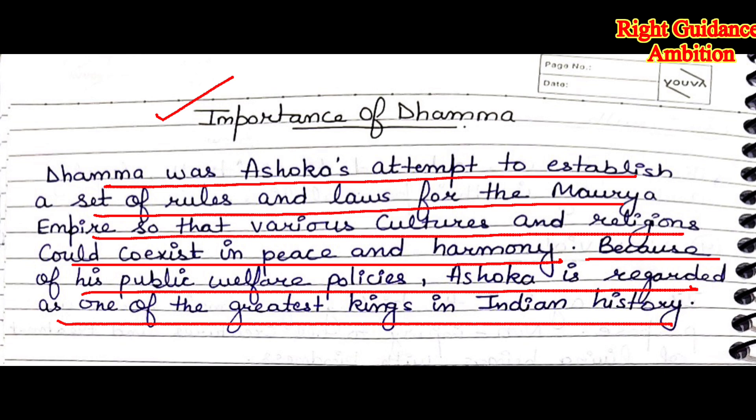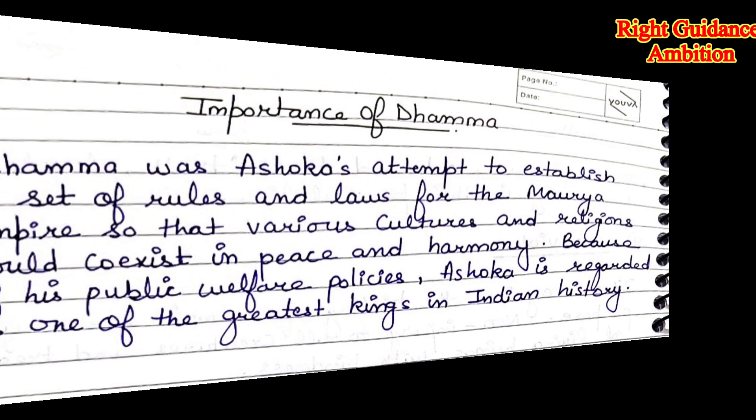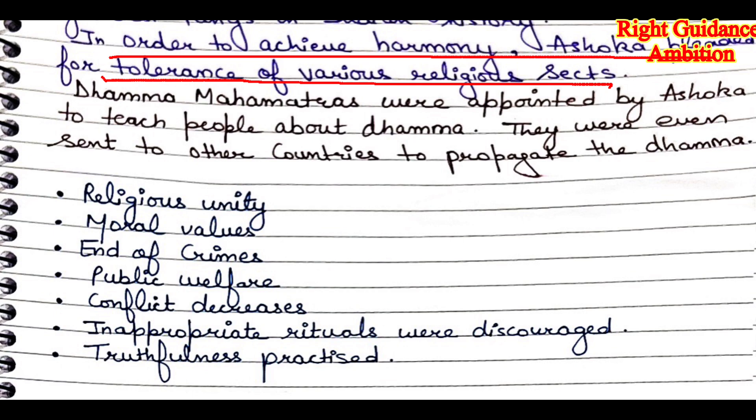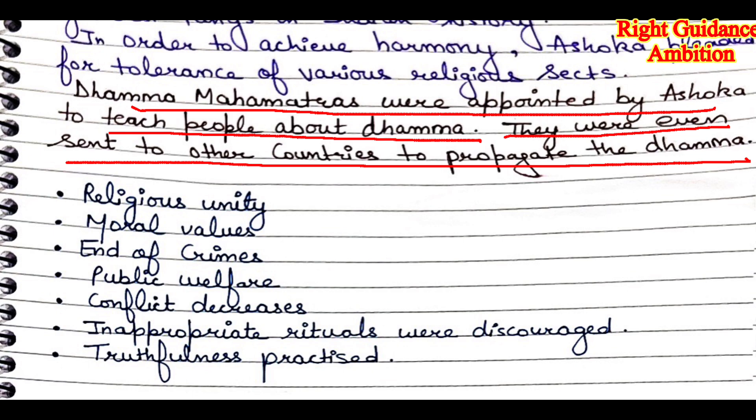Because of these principles, the Mauryan Empire developed and prospered for a long time, and Ashoka became one of the greatest kings in Indian history. Ashoka also appointed Dhamma Mahamatras — teachers — to teach the people about Dhamma. They were even sent to other countries to propagate the Dhamma, spreading it beyond India's borders.